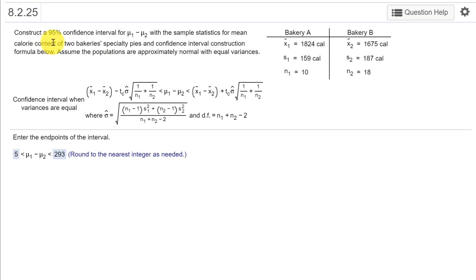We're asked to construct a 95% confidence interval for the mean difference, μ₁ - μ₂, with the sample statistics from here. We're told to assume the populations are approximately normal, which almost always is true in intro statistics, and we're also told that we should assume equal variances, which is important.